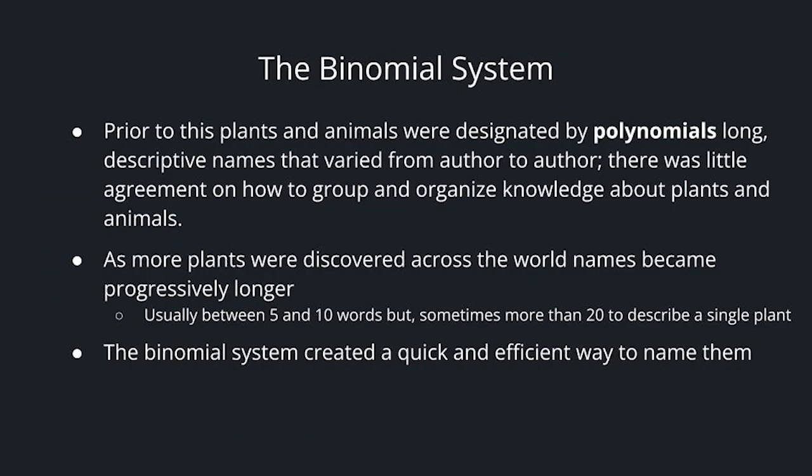Prior to the binomial system, plants and animals were designated by polynomials — long descriptive names that varied from author to author. There was little agreement on how to group and organize knowledge about plants and animals. As more plants were discovered across the world, names became progressively longer, usually between five and ten words, but sometimes more than twenty to describe a single plant. The binomial system created a quick and efficient way to name them.